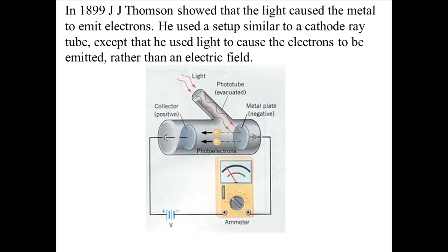In 1899, J.J. Thompson did experiments in which he used a setup similar to a cathode ray tube. He shined light on the charged metal plate, which caused electrons to be emitted. Essentially, he showed that the light caused the metal to emit electrons.